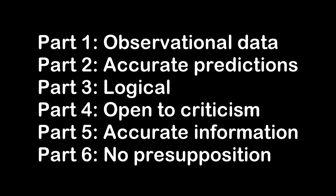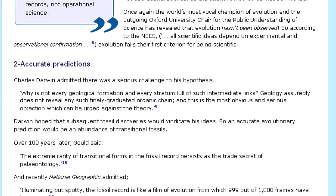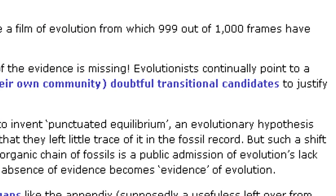They begin with the typical creationist quote-mine of Darwin, saying that the lack of transitionals is the biggest problem with his theory. They then repeat the lie that no intermediate fossils have been found. Moreover, it's clear that they don't even understand what a scientific prediction is.